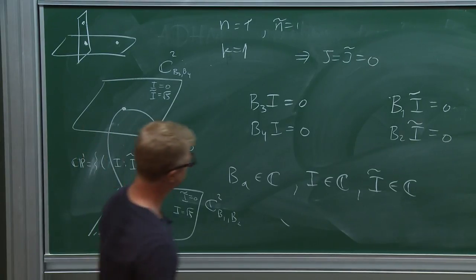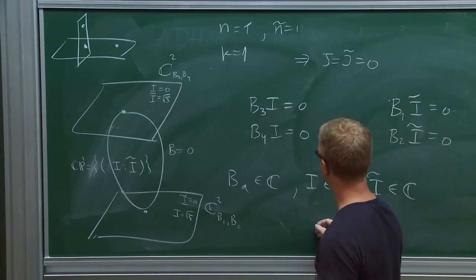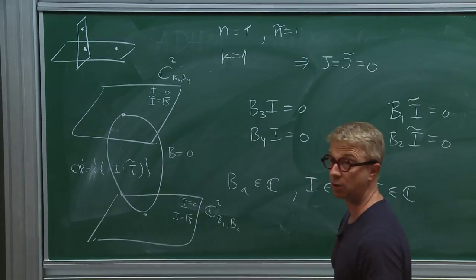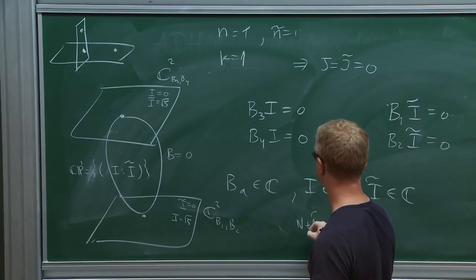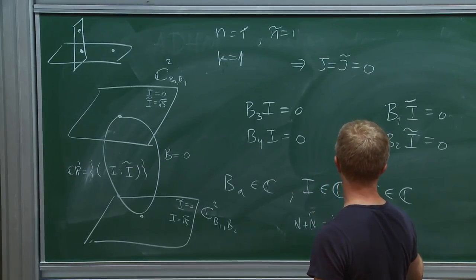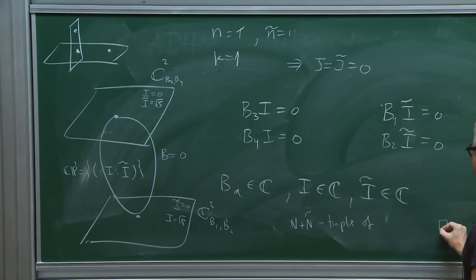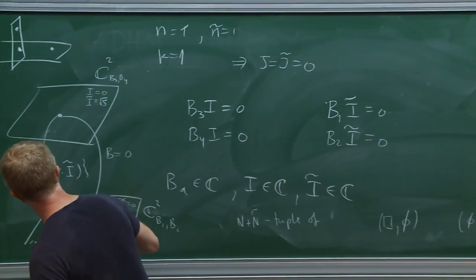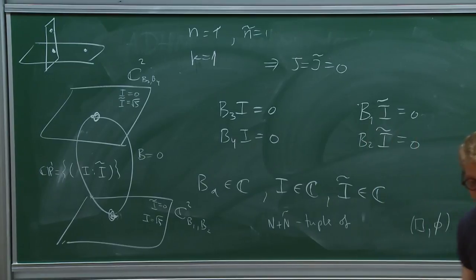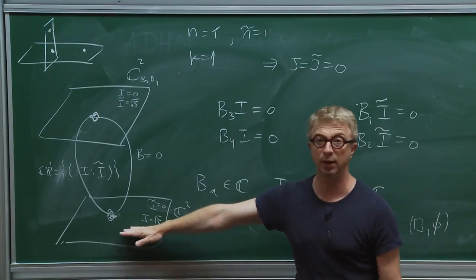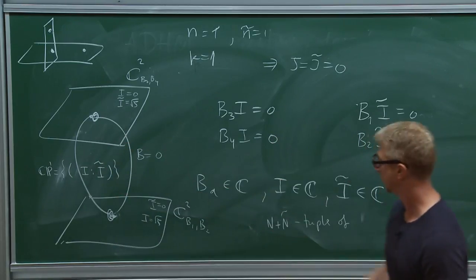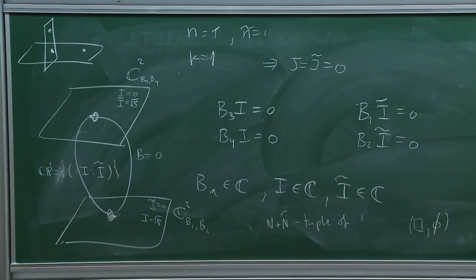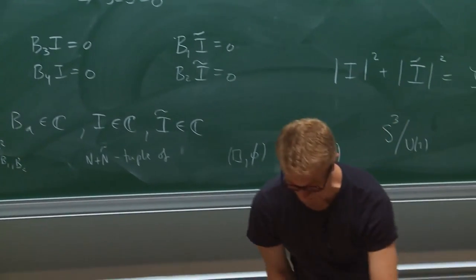In the classification of fixed points, we have n+ñ tuples of Young diagrams of total size one: either one box in the first set or one box in the second set — the two fixed points in this case. One is visible to an observer on the horizontal plane, the other is not. When the instanton moves to the other branch it appears to the horizontal observer that instanton charge was lost, but in the full string theory embedding, nothing is lost.